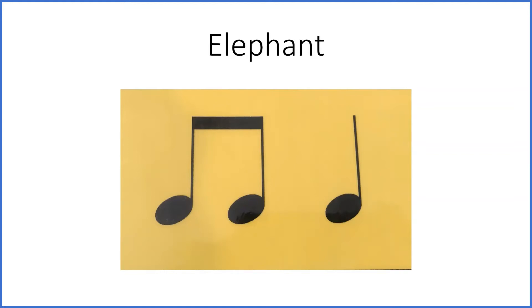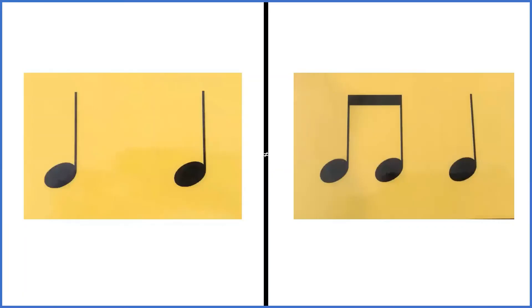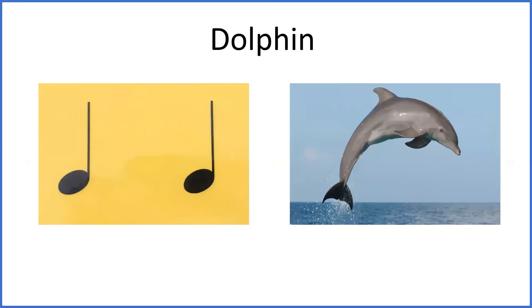Now that we're getting the hang of it, let's try a guessing game. What do you see, children? Dolphin! Let's clap the rhythm of the word dolphin. Dolphin. Which of these rhythms sounds like dolphin? Can you point to it? Point to the one that sounds like dolphin. Yes — Dolphin. We clap two times for dolphin.